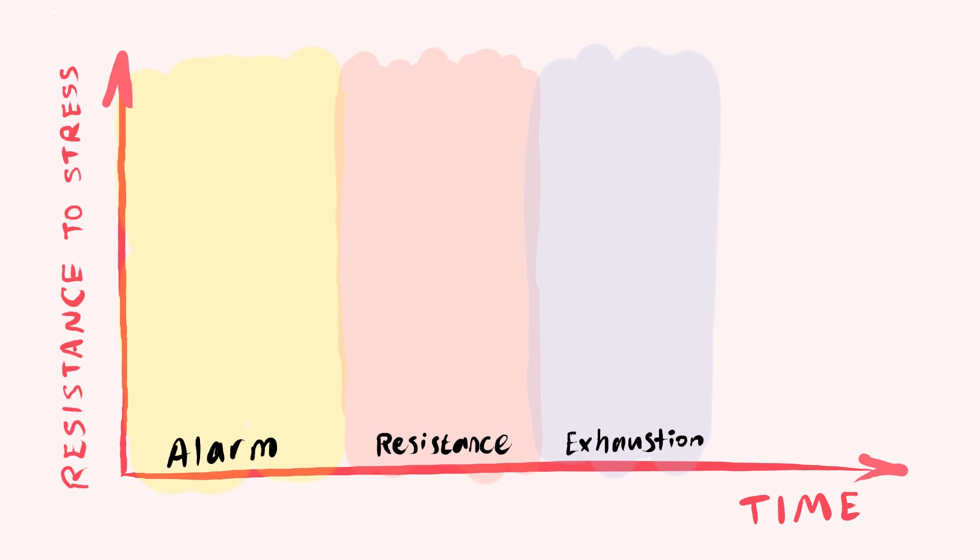Picture the alarm phase as our instinctive, immediate reaction to sudden threats, mirroring the zebra's swift response to a predator. The resistance phase can be likened to us pushing through an especially tough week at the office. But the real concern arises if we remain in this stress state for too long, leading us into the exhaustion phase, where our bodily resources are strained to the limit.